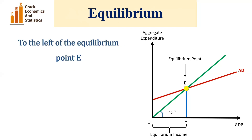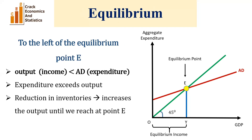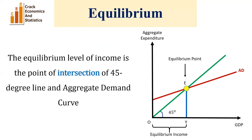To the left of equilibrium point E, output is less than aggregate demand because the aggregate demand curve is above the 45-degree line, so expenditure exceeds output. We have a reduction in inventories, which increases output until we reach point E. Therefore, equilibrium exists only at point E, where the 45-degree line and aggregate demand curve intersect. The equilibrium level of income is OY, and this diagram is known as the Keynesian cross diagram.